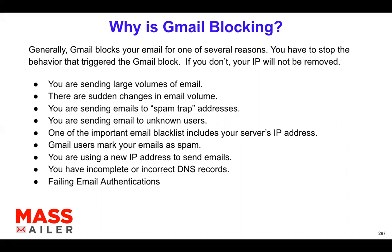Maybe you just got a new IP address and it's not properly warmed up. With MassMailer we always warm up for three months, and we also recommend that you warm up your IP in the initial few weeks. Maybe the infrastructure is missing — whenever we onboard a MassMailer client, we make sure they have proper DNS records. Sometimes if your IT is making changes, incorrect DNS records can be an issue. If you do not have proper authentication, or even if you have authentication but it's failing, that could be a big reason why Gmail is blocking your IP.